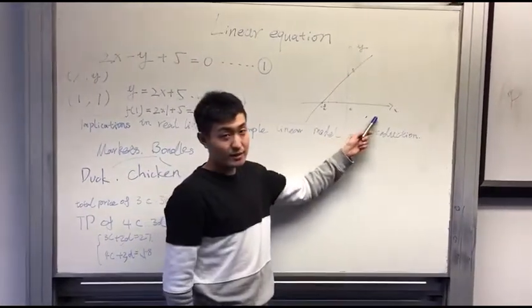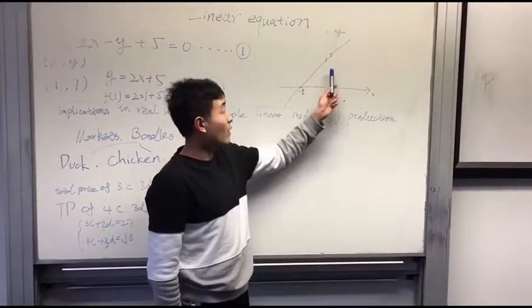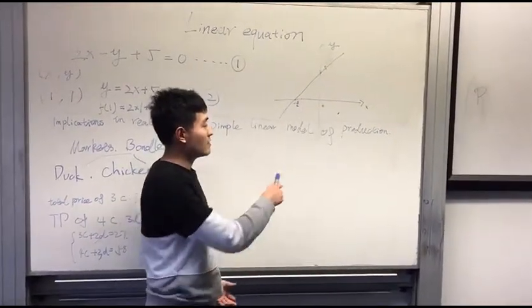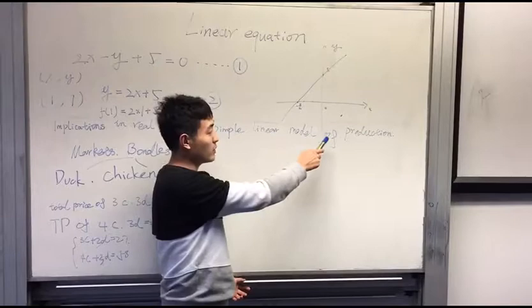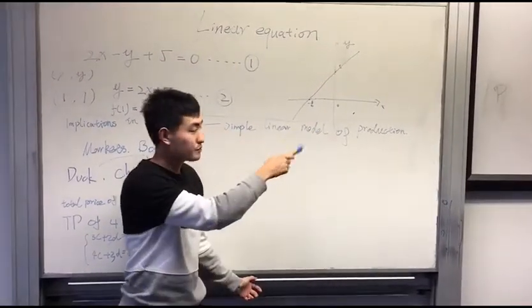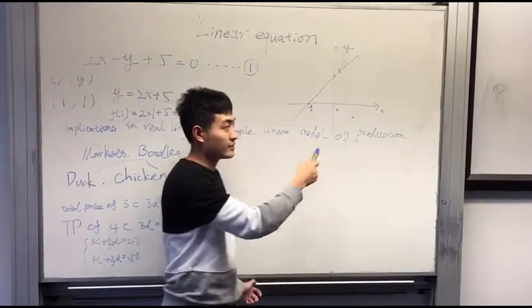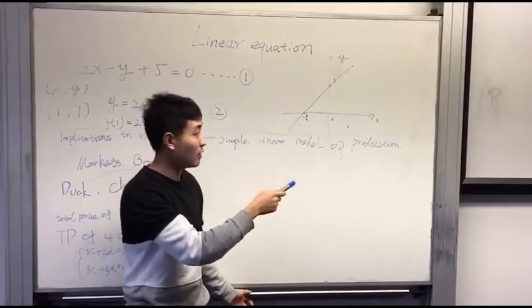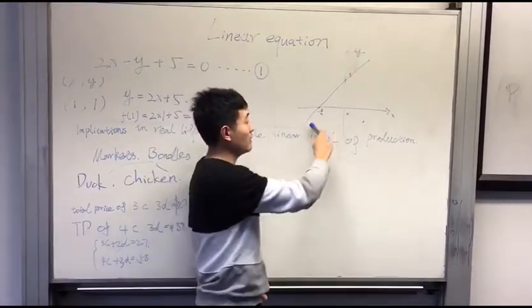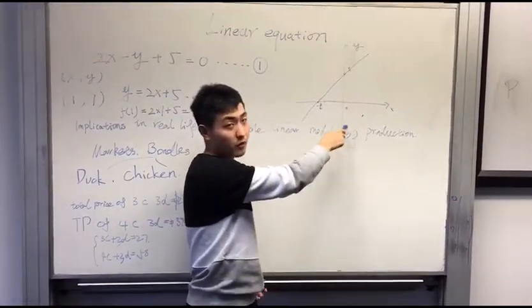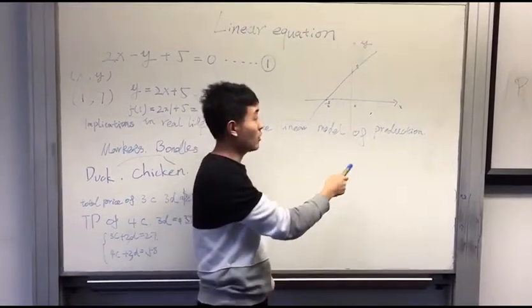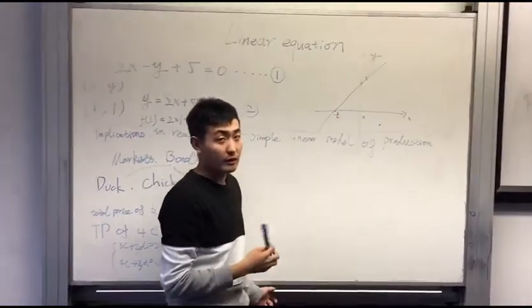With x increasing, y will also increase. In normal life, if we represent x as products sold and y represents revenue, it will be more reasonable for this diagram. So the more products you sell, the more revenue you will get.